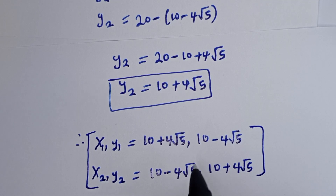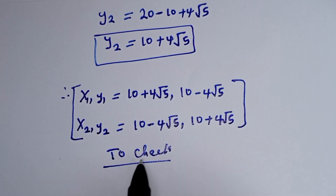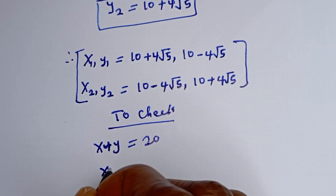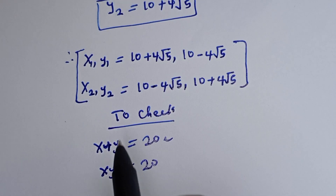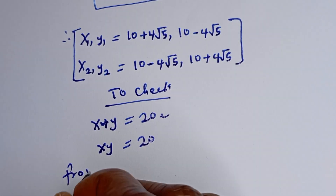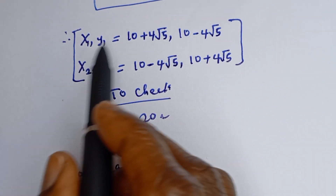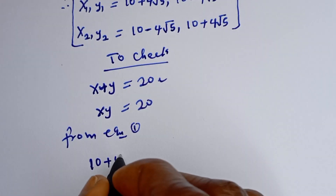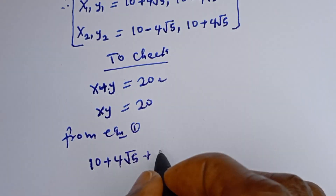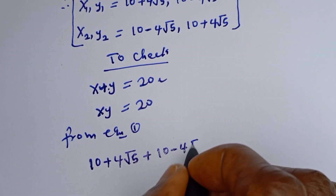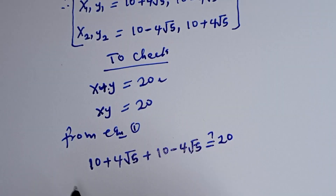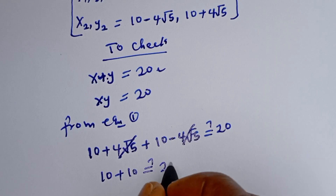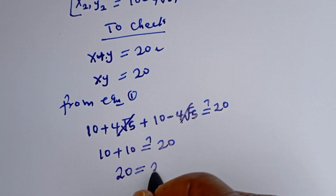We can check to confirm if this answer is right or wrong. The given equations are S plus Y equal to 20 and S times Y equal to 20. Let's check S1, Y1 using equation 1: 10 plus 4 root 5 plus 10 minus 4 root 5. The 4 root 5 terms cancel, giving 10 plus 10 equals 20, which is true.